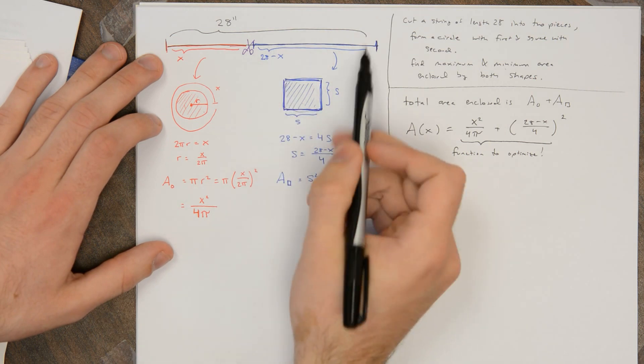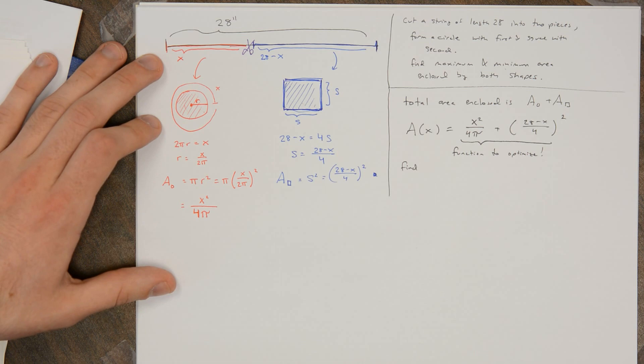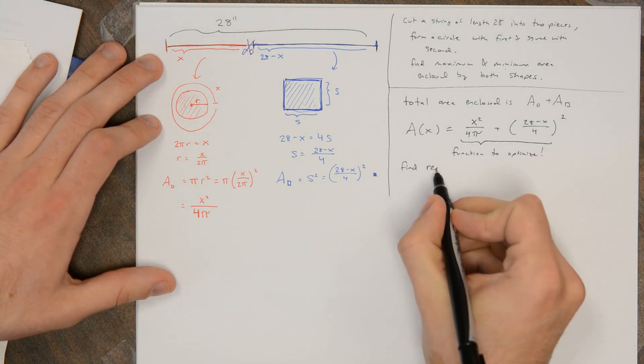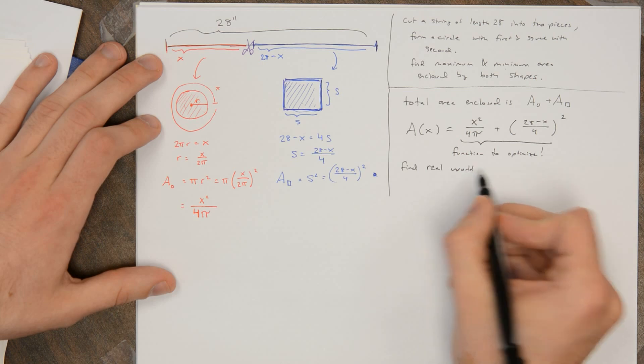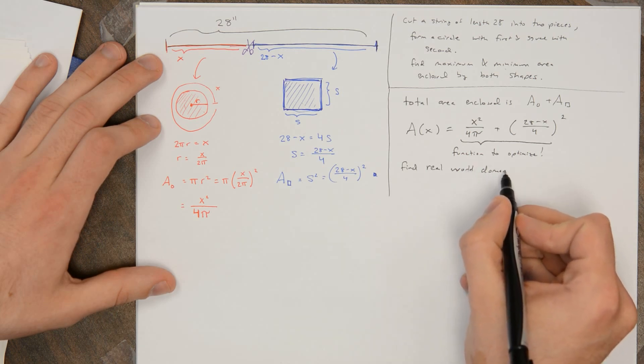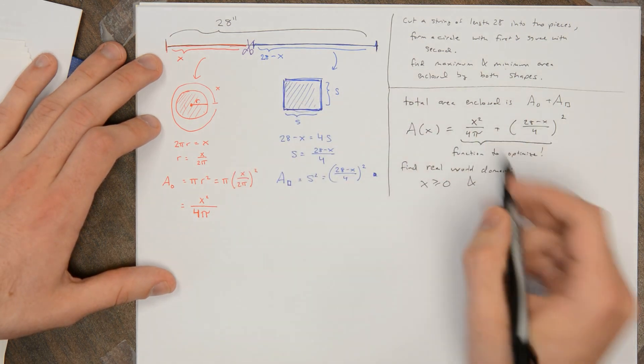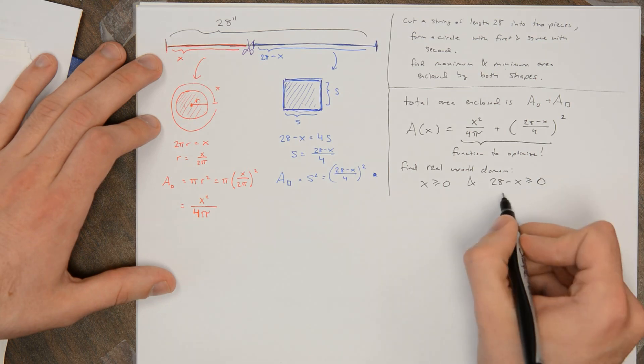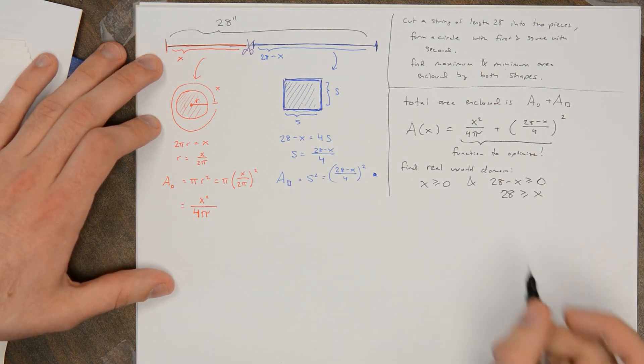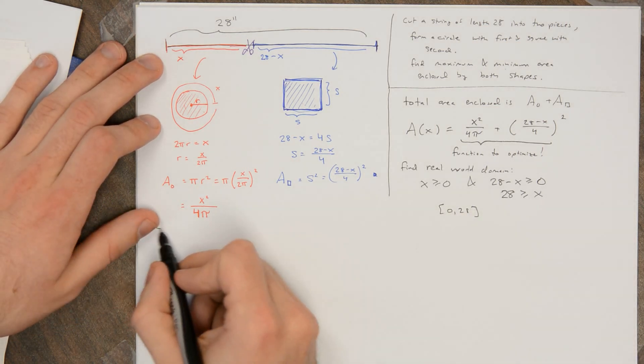And likewise, I can't cut a 29 inch piece of string out of a 28 inch piece of string. So when I try to find the real world domain, x needs to be greater than or equal to 0. And this other piece of string, 28 minus x, needs to be greater than or equal to 0, which means that x can't be larger than 28. So the domain is from 0 to 28. These are the possible lengths that you can cut out.